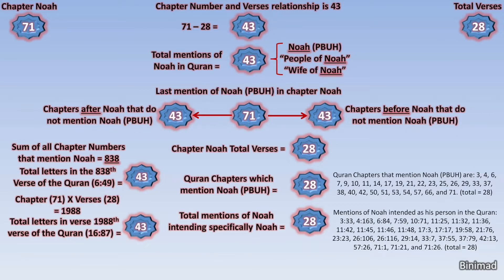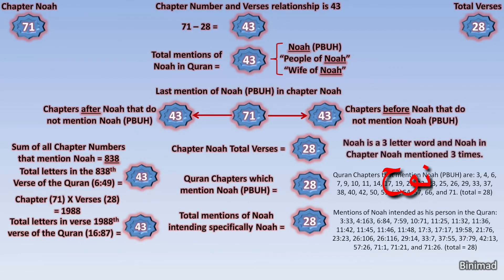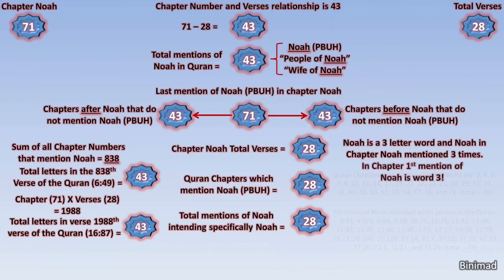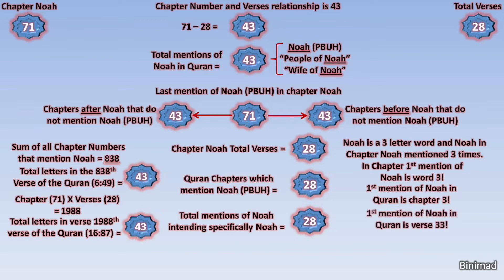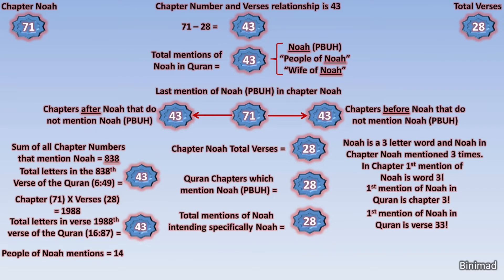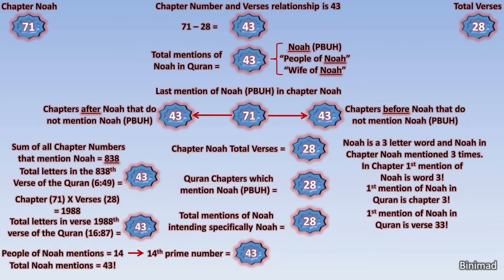Nuh is a three-letter word, and Nuh in Chapter Nuh was mentioned three times. In fact, the first mention of Nuh in Chapter Nuh is word number three. Amazingly, the first mention of Nuh in the Quran is in Chapter 3, and even more amazing, it was in verse 33. I also found that while Nuh in person was mentioned 28 times, the people of Nuh were mentioned exactly 14 times. Shockingly, the 14th prime number is 43. How can the total mentions of Nuh be 43 and the total mentions for the phrase 'Noah's people' be 14, while the 14th prime number is 43?